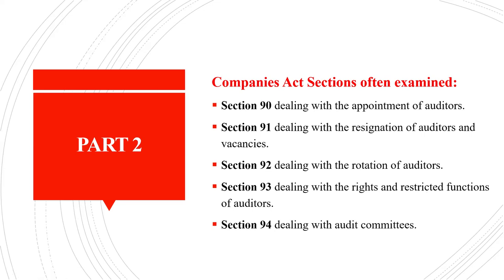Section 93 deals with the rights as well as restricted functions of auditors. There are certain things we are allowed to do as auditors in line with the Companies Act, and there are certain restrictions — things that go beyond our responsibilities — that we should not be found participating in. Section 94 deals with the audit committee: the interaction between auditors and the audit committee, and the responsibility of audit committees when dealing with auditors.